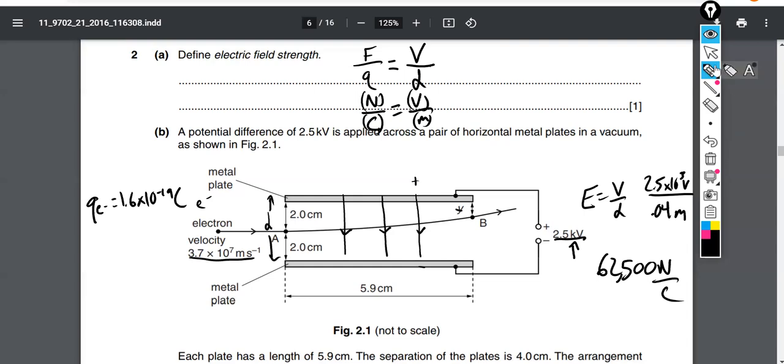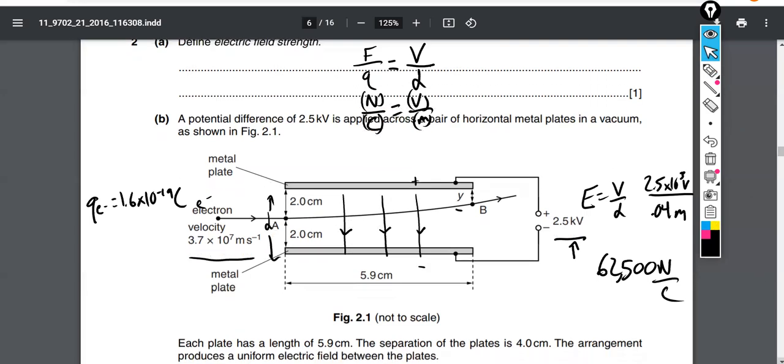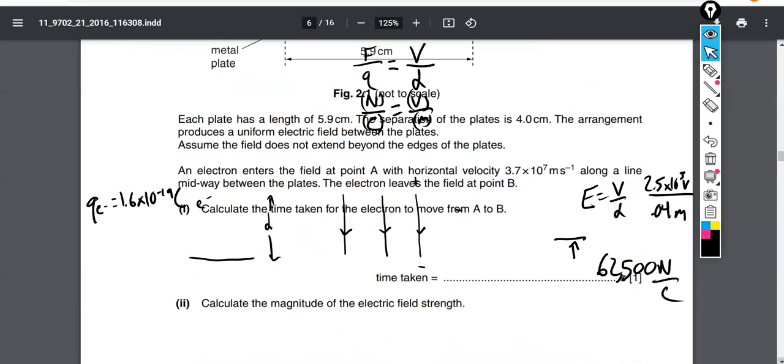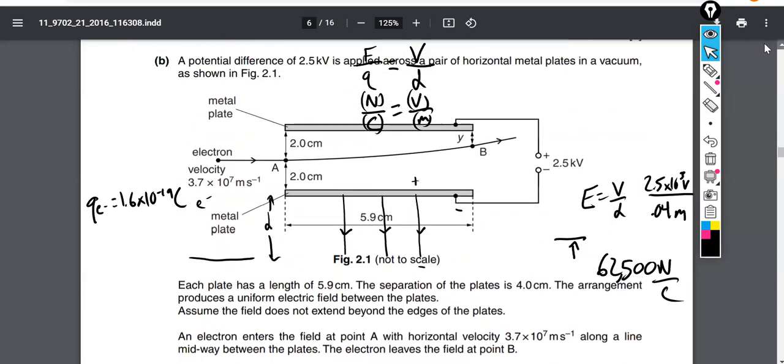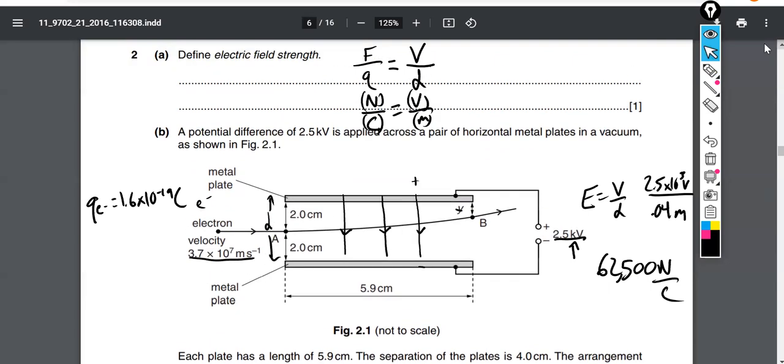I think that's actually the second thing that we needed to calculate. The first thing was the time that it takes this to move from A to B. If we look ahead of the paper here, let's calculate the time taken to move, and then calculate the magnitude of electric field strength. We already took care of part two there, but how can we solve for the time that it takes the electron to move from A to B? We don't want to overcomplicate the physics when it's simple. The velocity in the horizontal direction, there's nothing to change it. So it's being affected by a uniform electric field.